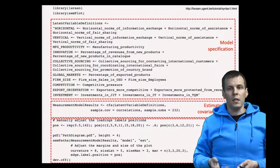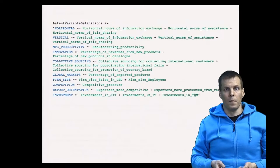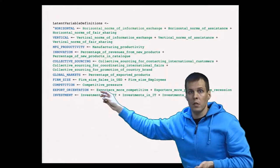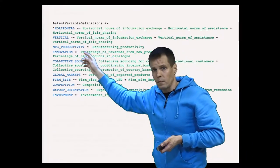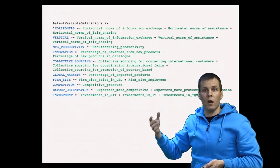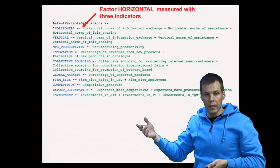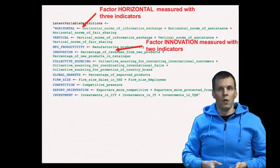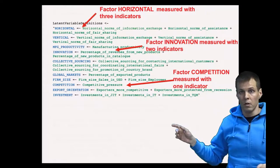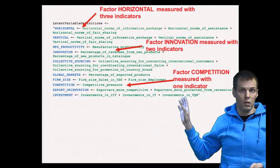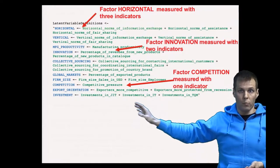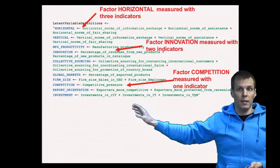Let's look at the model specification in more detail. I have color-coded it: blue is for factors and green is for indicators. We specify about eight factors and then specify how each indicator loads on the factor. So we have a factor 'horizontal' measured with three indicators, a factor 'innovation' measured with two indicators, and a factor 'competition' measured with a single indicator — so three-indicator factors, two-indicator factors, and single-indicator factors.